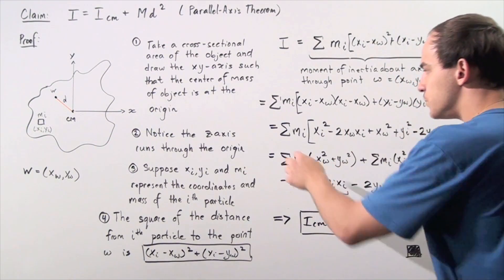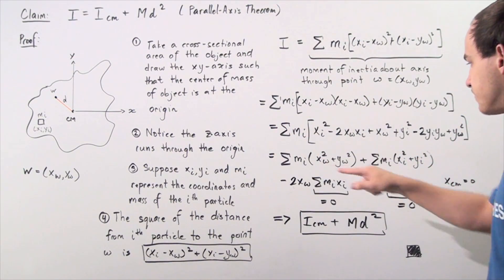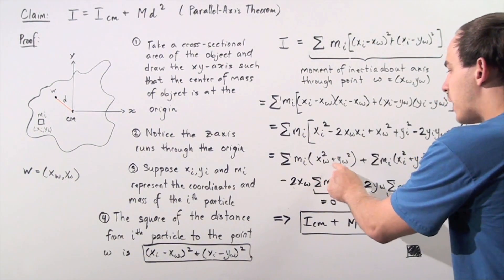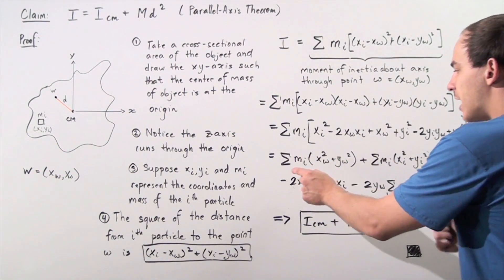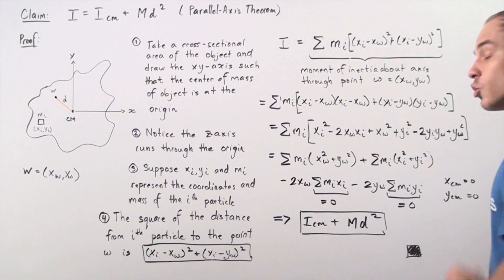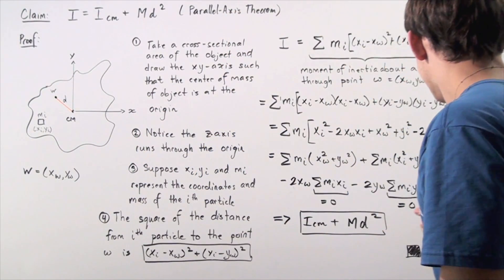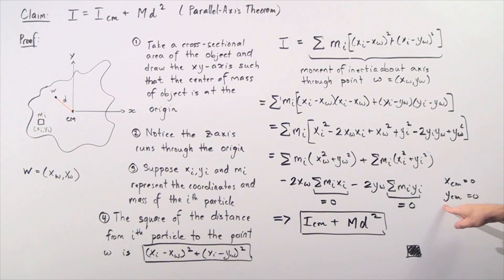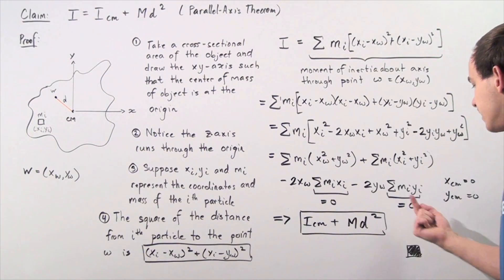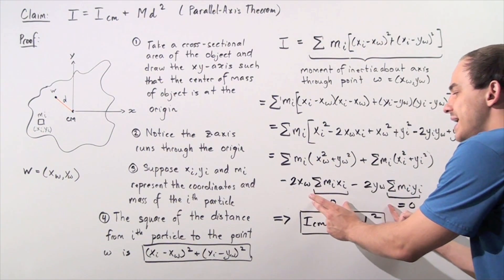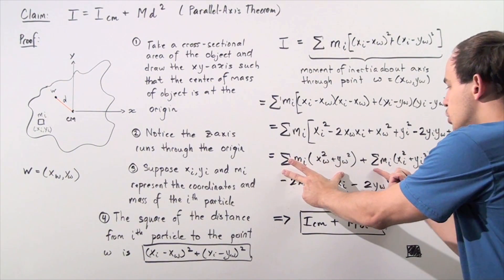Now let's distribute the summation over mi and rearrange. We combine x_w² and y_w² together, and xi² and yi² together, giving four groups of terms. Because we chose the origin to be at the center of mass, x_cm = 0 and y_cm = 0. Therefore, the sums of mi·xi and mi·yi are both zero, so those entire terms vanish and we are simply left with two summations.